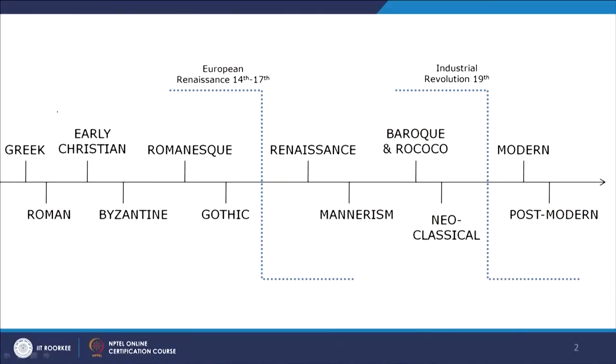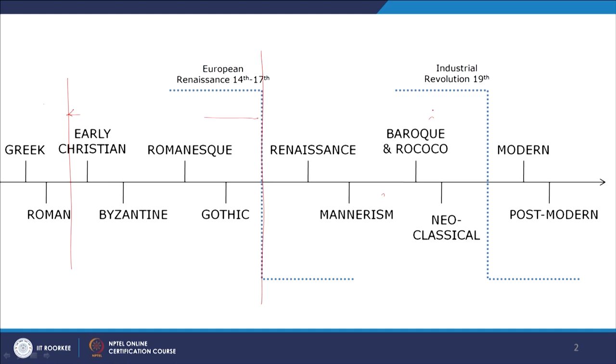If we look at the timeline shown in the last slide of the previous lecture, Greek and Roman was the classical architecture and design art style. Then the period between classical to Renaissance followed. From the 14th century onwards, Renaissance started and lasted till the 17th century. Then mannerism, Baroque, Rococo, and neoclassical followed. After that the industrial revolution started, and from the 1920s onwards modern architecture began. Modern and post-modern together is called contemporary.